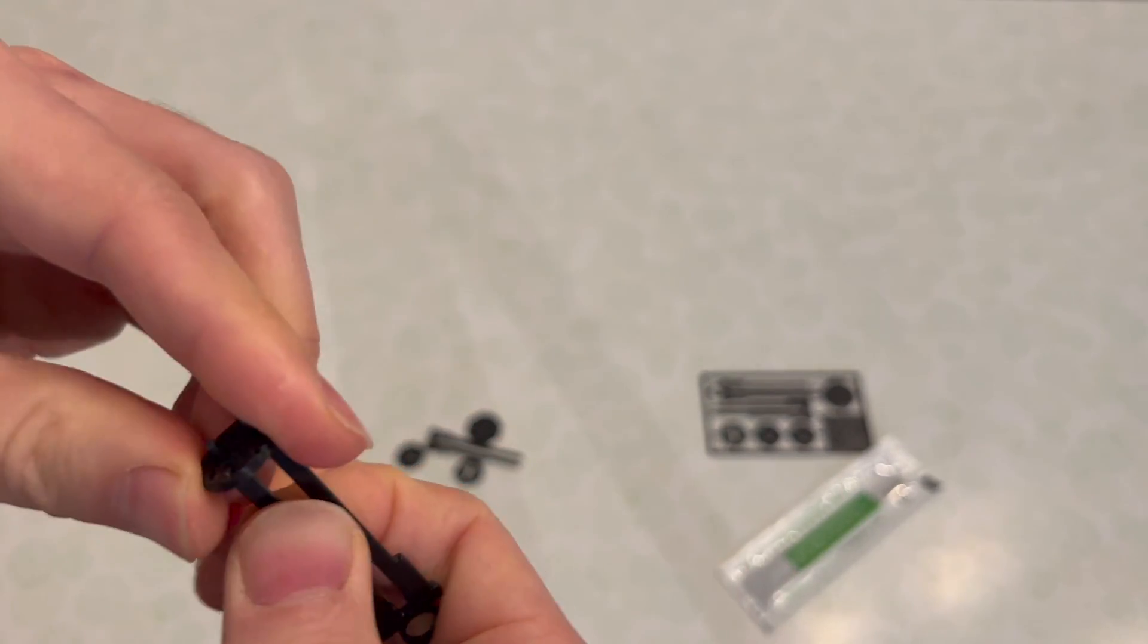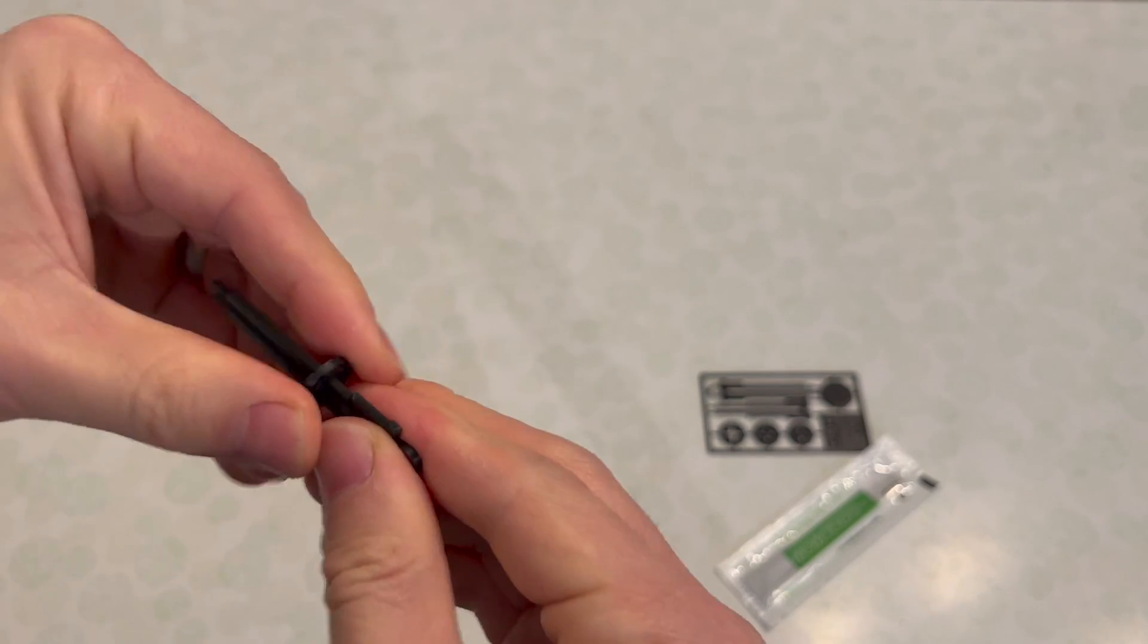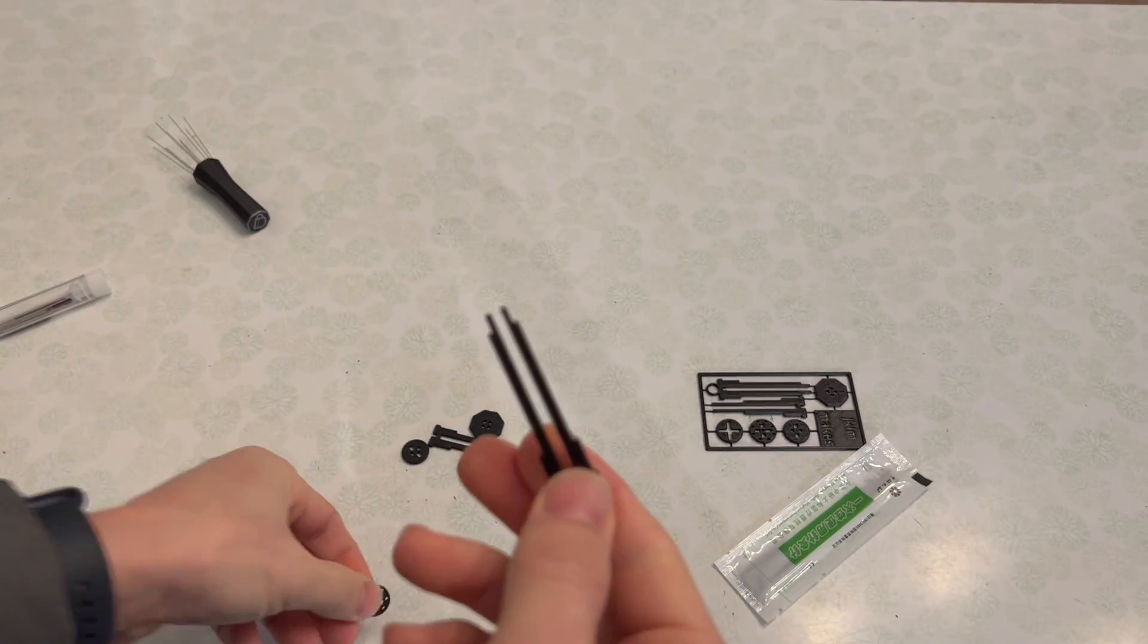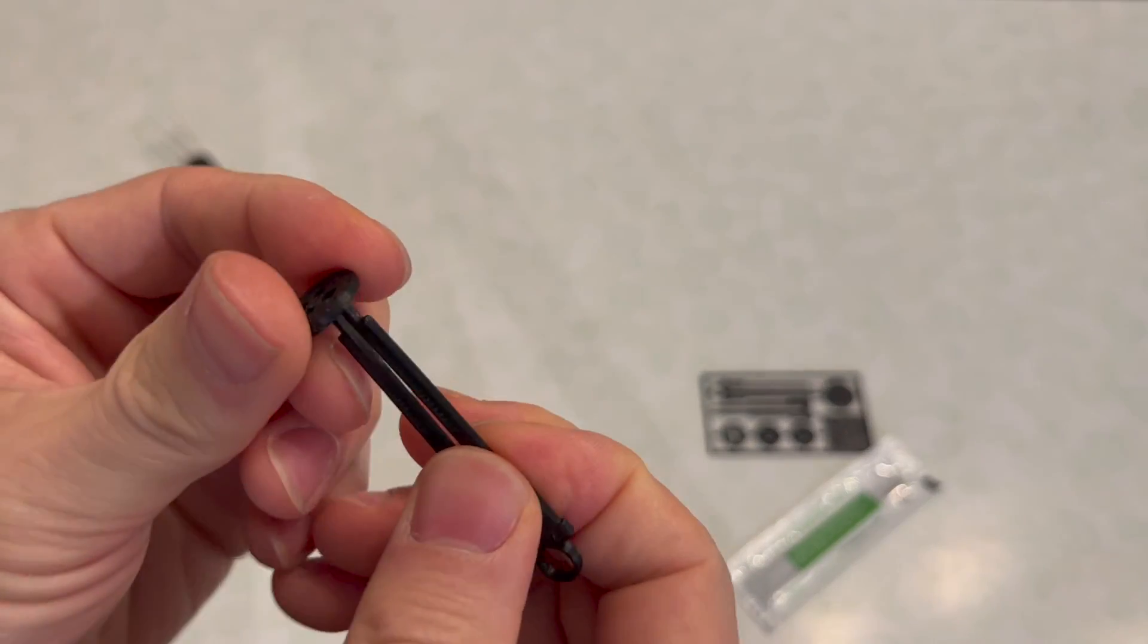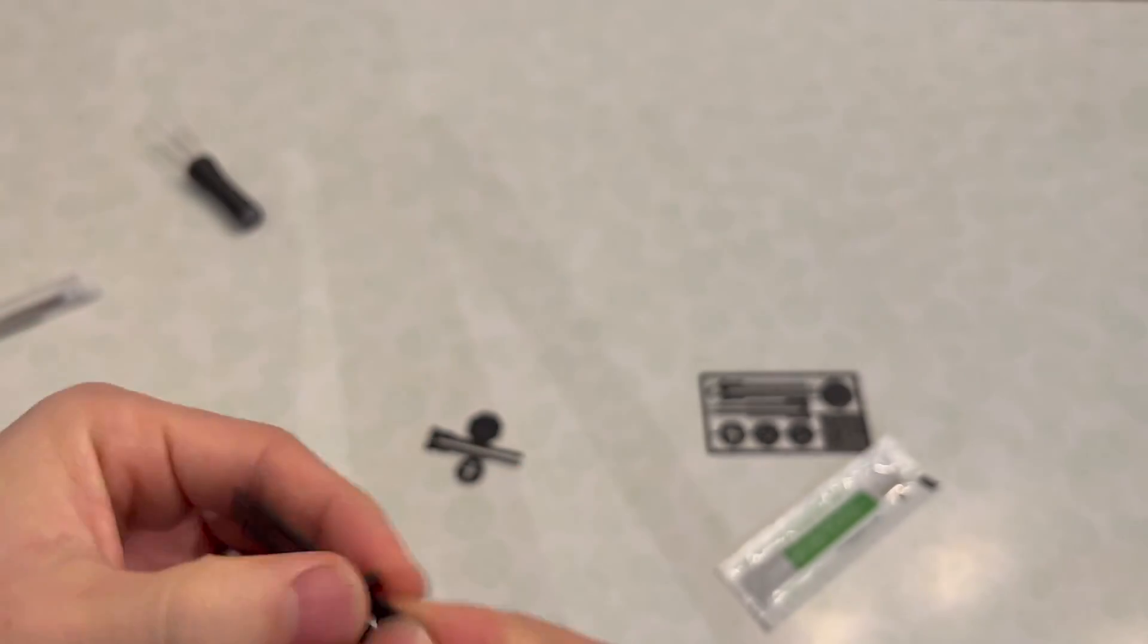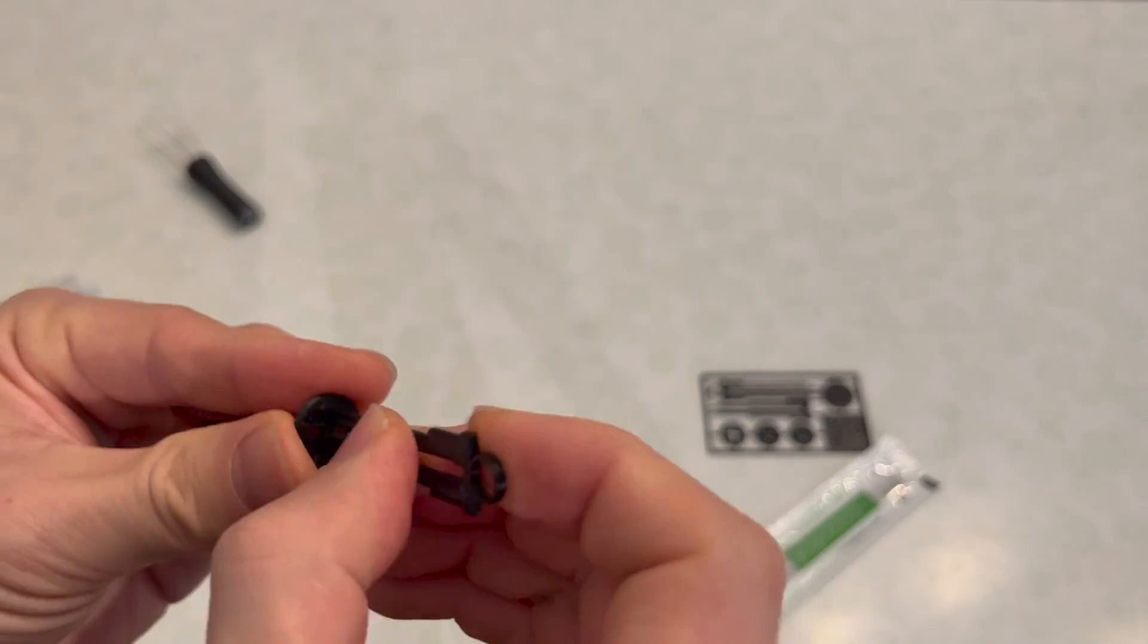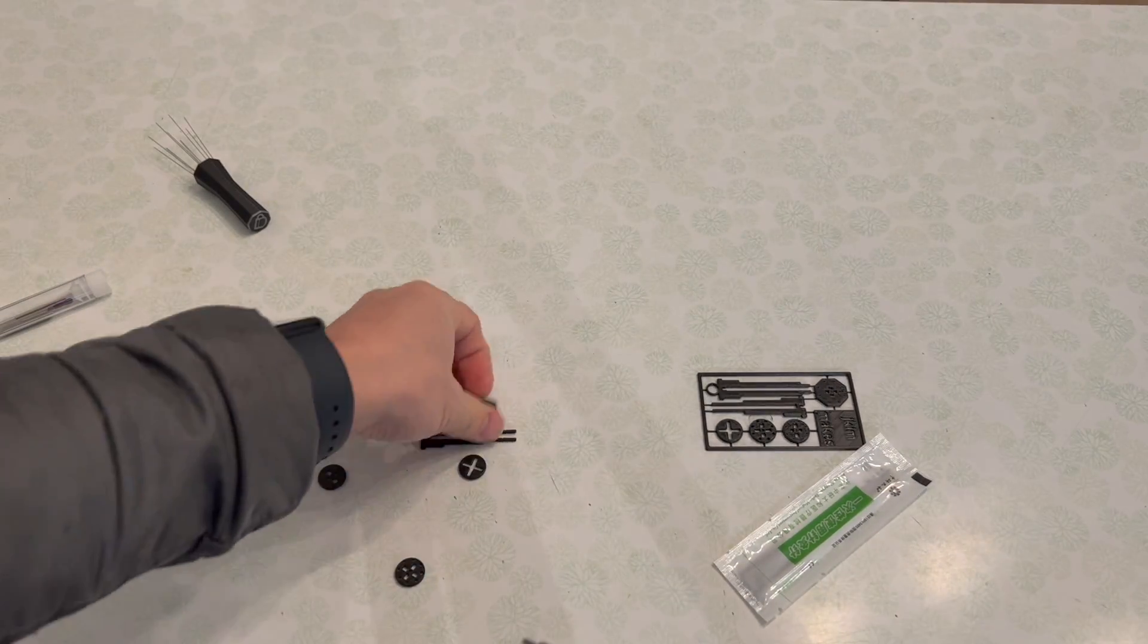Initially when you get it, it may be a little stuck, so just push these in here so that you deburr the plastic from your printer. Likewise here, just make sure that all of these things are sliding in nicely.